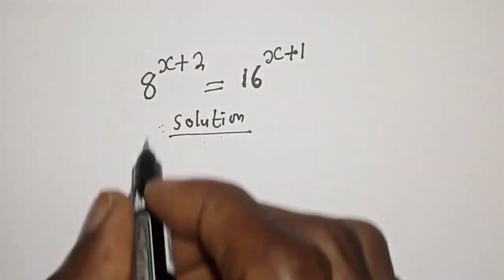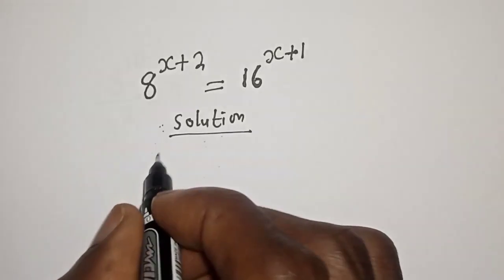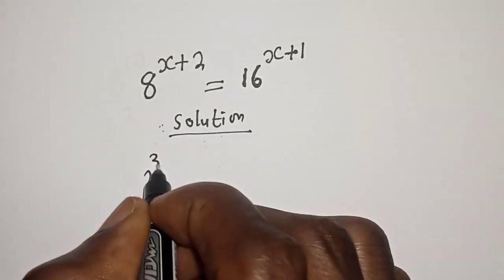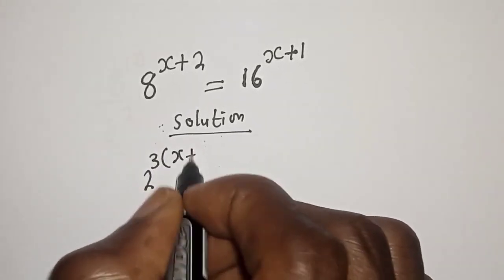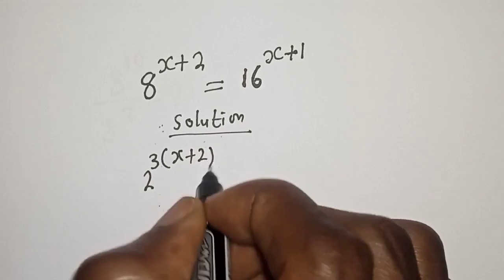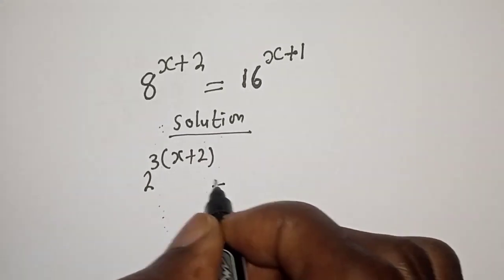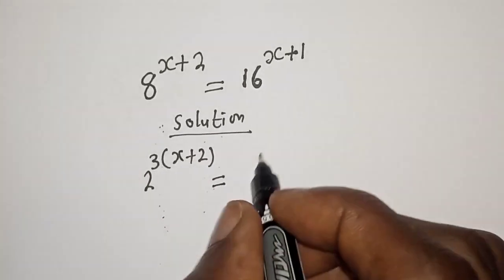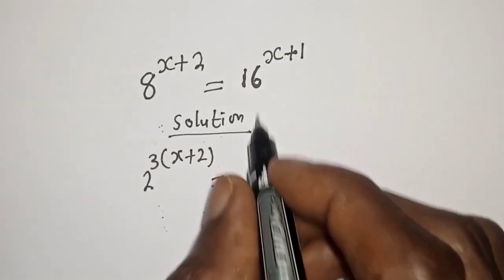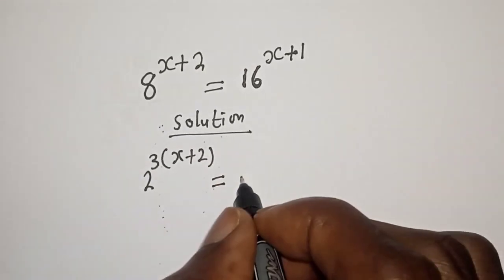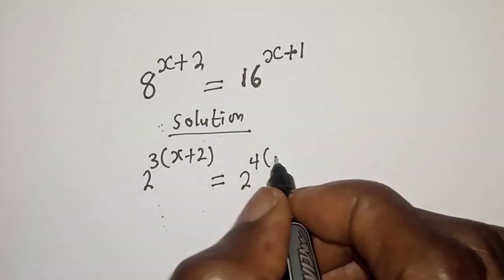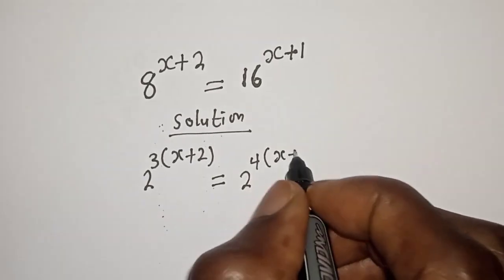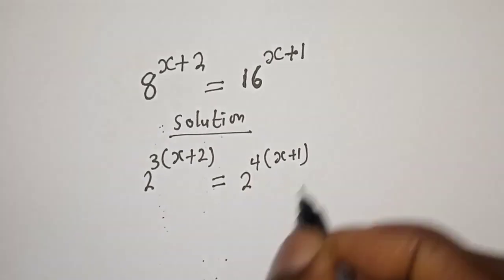8 raised to power s can be written as 2 raised to power 3, bracket s plus 2, is equal to 16, which can be written as 2 raised to power 4, bracket s plus 1.